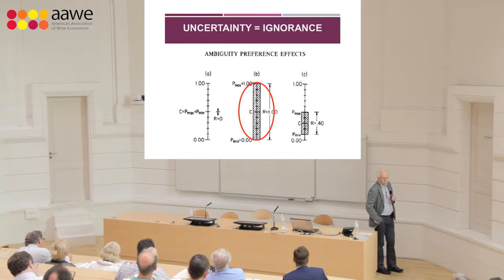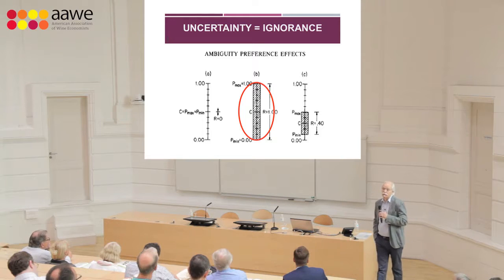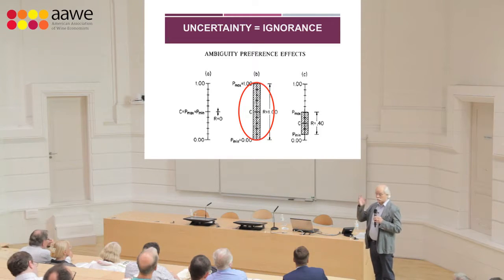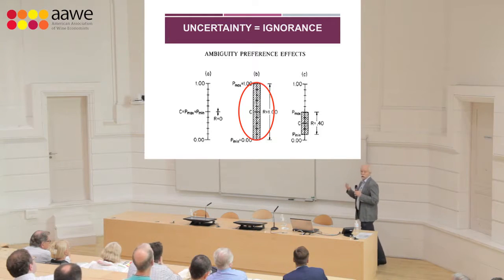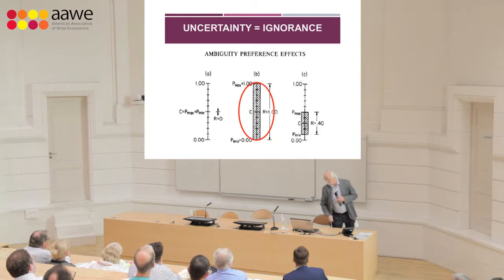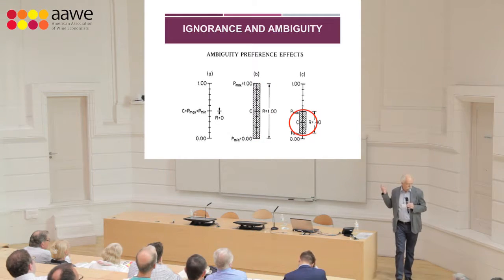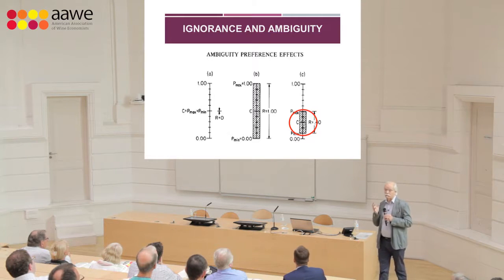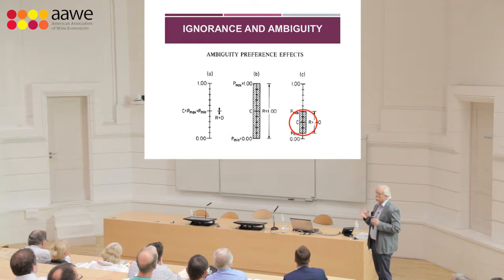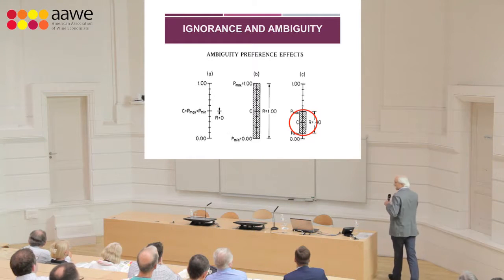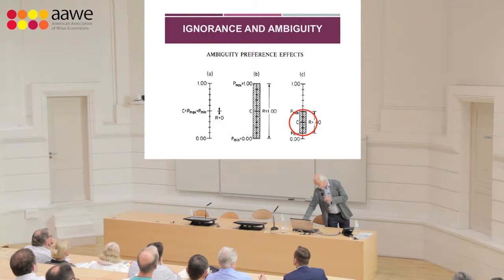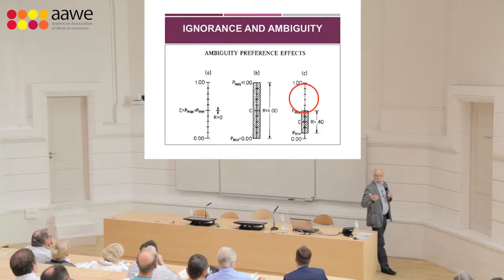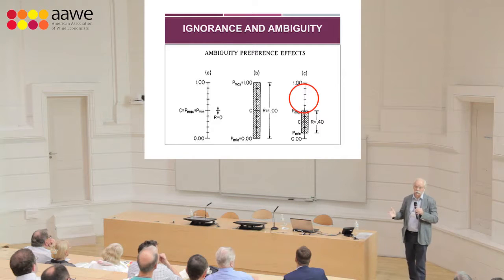The next possibility is that you have no information at all — it's like the Ellsberg problem where you don't know how many red or black balls are in the urn, and you have to make a decision without knowing anything about the probability of facing the risk. Then there is what we refer to as ambiguity, where you have some information but it is ambiguous because you have a range of probabilities. You have more information than in the uncertainty case, but the information differs depending on the range of probability provided.